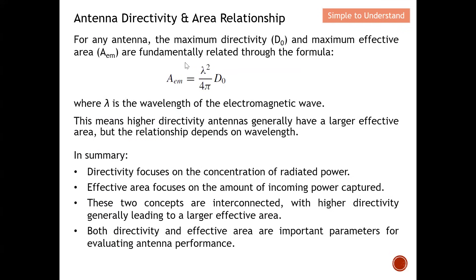So this is what we want to prove: for any antenna, the maximum directivity D₀ and maximum effective area A_em are fundamentally related by the equation D₀ = (4π / λ²) · A_em, where λ is the wavelength of the electromagnetic wave. This means that a higher-directivity antenna will in general have a larger effective area, but the relationship also depends on wavelength.